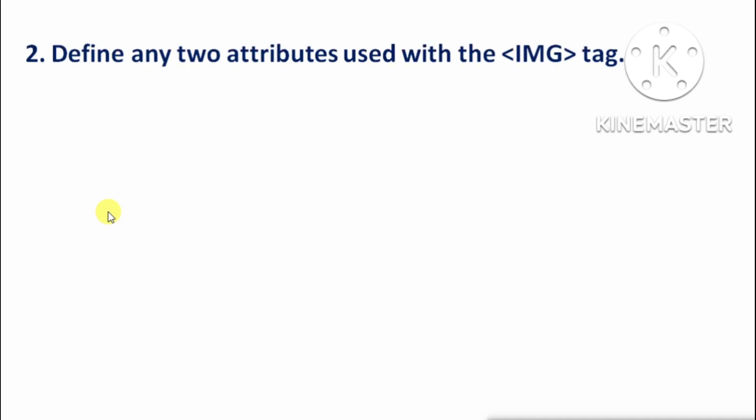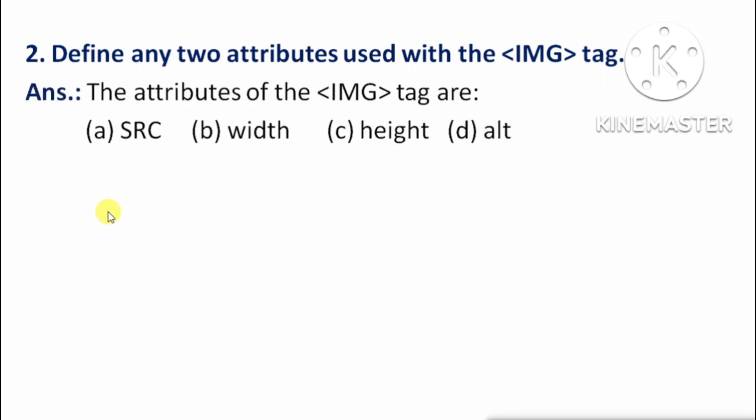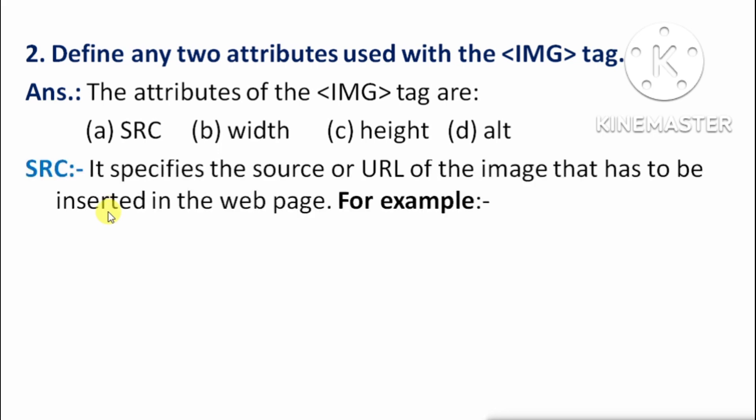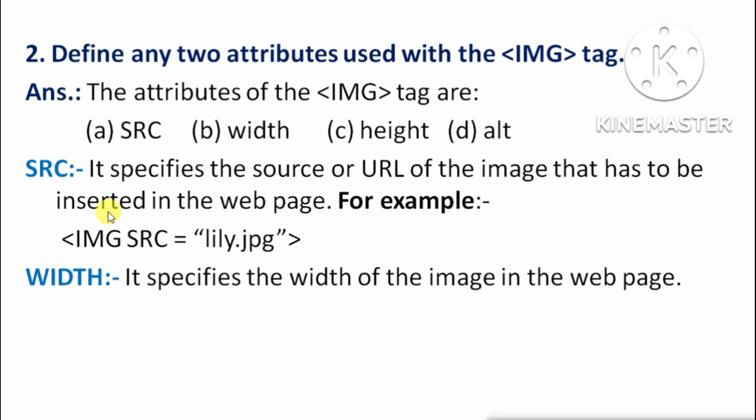Next question: Define any two attributes used with the IMG tag. IMG tag ke saath use hone wale attributes mein se do ko define kariye. Total four attributes hain: SRC, width, height, and ALT. First attribute SRC: It specifies the source or URL of the image that has to be inserted in the webpage. Next is width: It specifies the width of the image in the webpage.